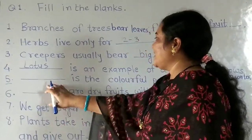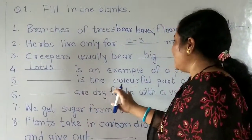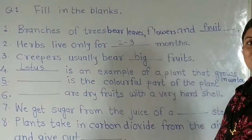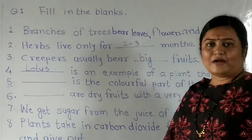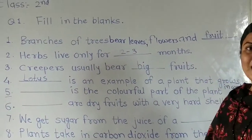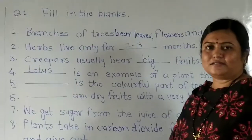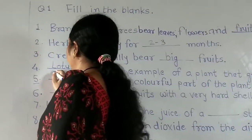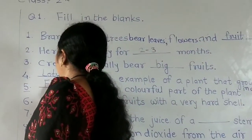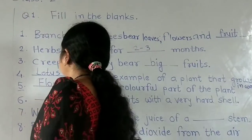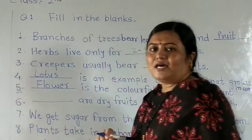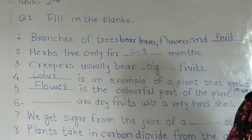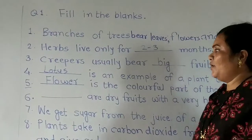Number 5: Dash dash is the colorful part of the plant. Which is the colorful part of the plant? The answer is flower. Flower is the colorful part of the plant.